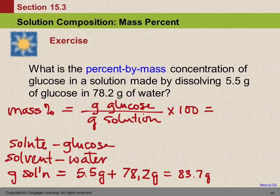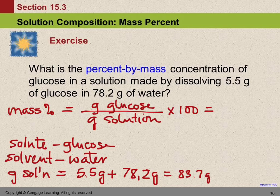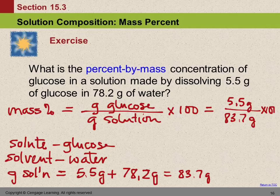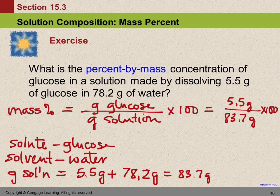So now we're prepared to put this into the equation. The grams of glucose was 5.5 grams, and the grams of the whole solution was 83.7 grams. And then we're going to multiply this by 100. So 5.5 divided by 83.7 times 100. This equals 6.6%.